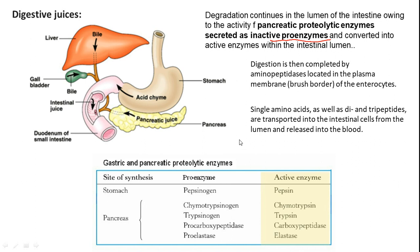In the stomach, the proenzyme pepsinogen is converted to active pepsin in the presence of acid. From the pancreas, the proenzymes released are chymotrypsinogen, trypsinogen, procarboxypeptidase, and proelastase. These are activated into chymotrypsin, trypsin, carboxypeptidase, and elastase, respectively. Various factors control these conversions.